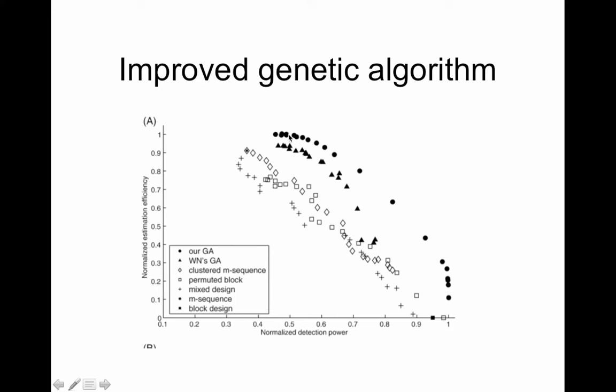The clustered m-sequence, so it's a type of m-sequence which I talked about a second ago, those are the diamonds, so those are down here and it does okay but it's not great. Then there is the permuted block design which I also talked about, those are the open squares and they're around the same as the clustered m-sequence. So one is not really better than the other.